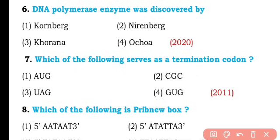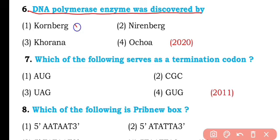Question number six. DNA polymerase enzyme was discovered by Kornberg, Nirenberg, Khurana, or Aquas? So the correct answer is option one.